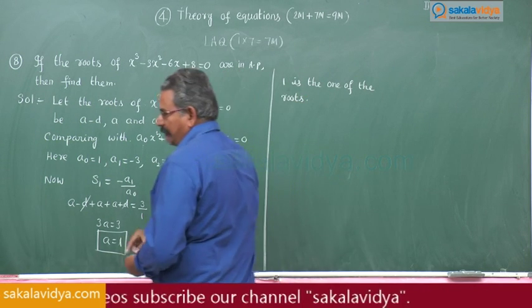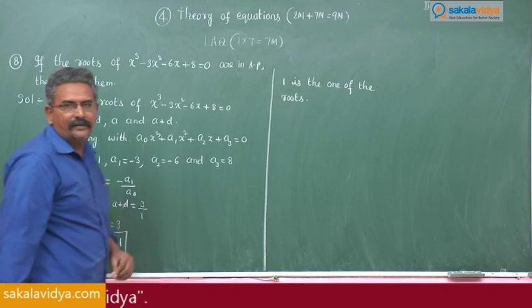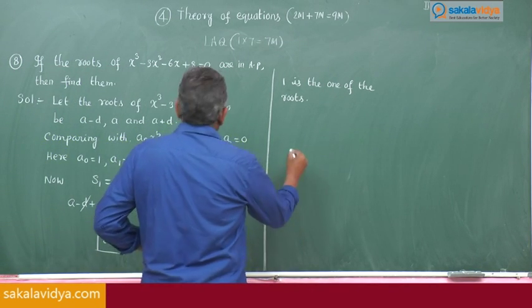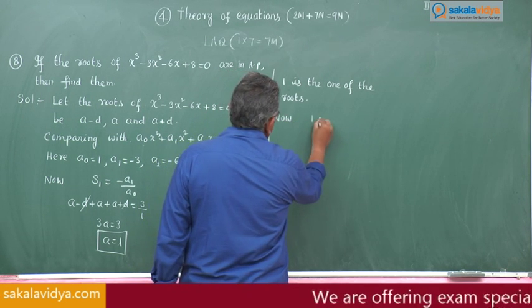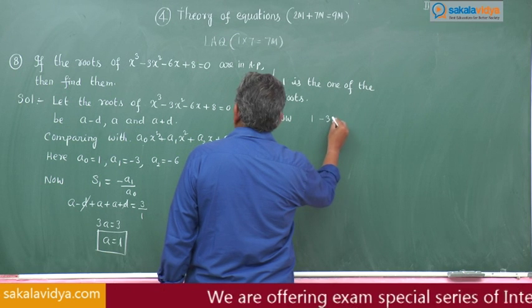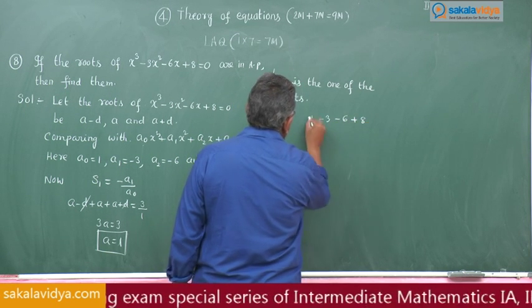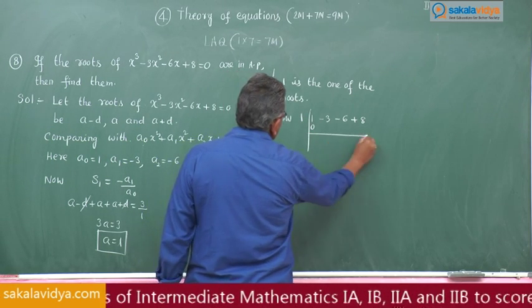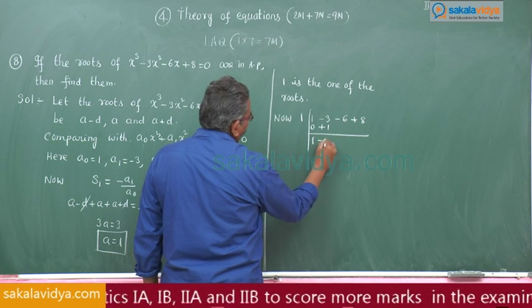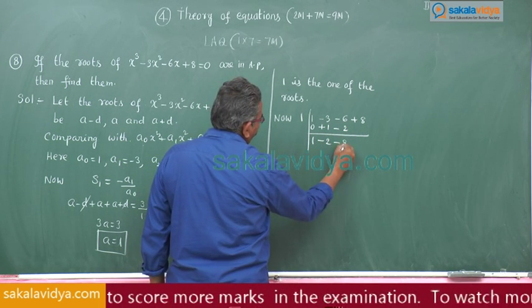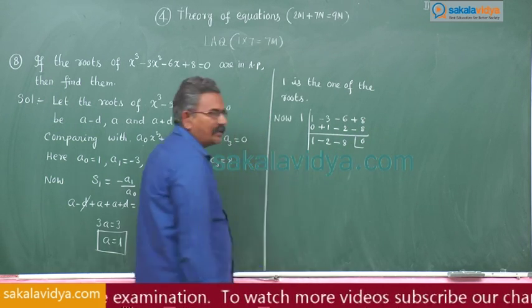This equation can be reduced using synthetic division method. Using the coefficients 1, -3, -6, +8 and substituting 1: we get 1, +1, -2, -2, -8, and -8, 0. This gives us the reduced equation.